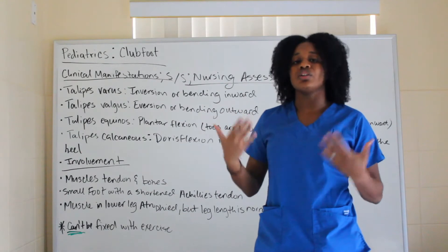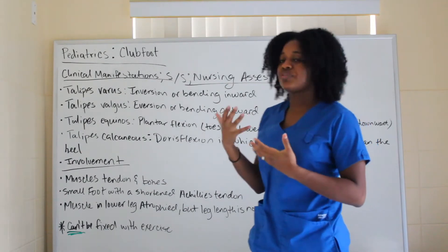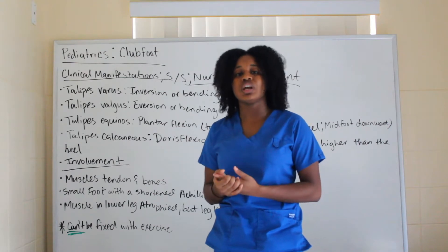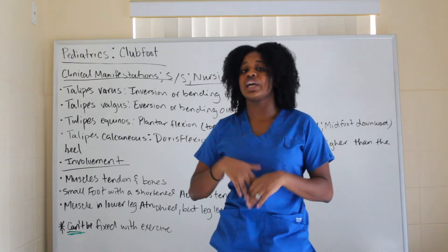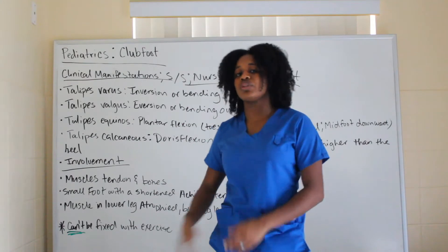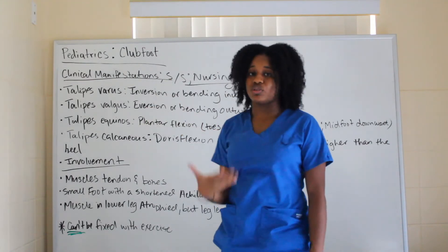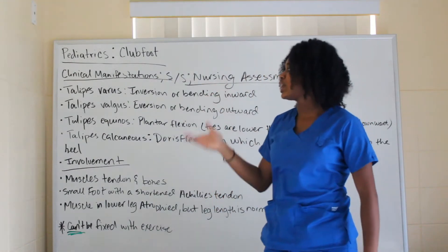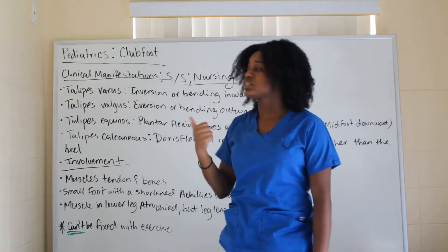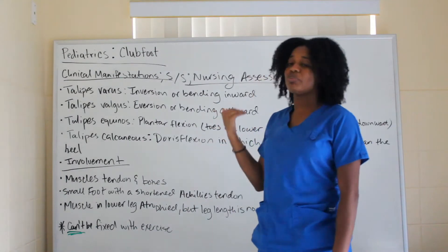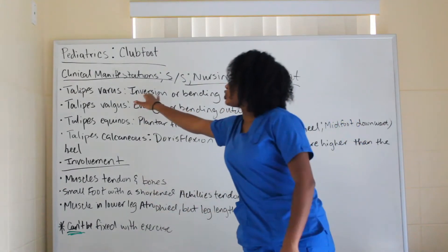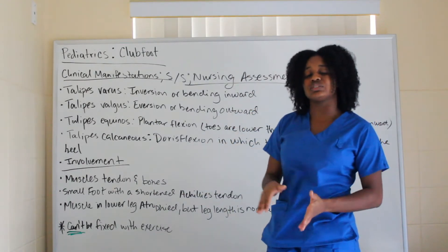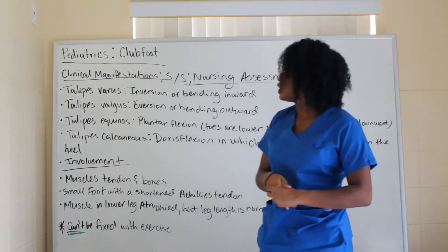Now we have our clinical manifestations, also known as signs and symptoms or nursing assessment. Assessment is primarily observation — you look at the position of the foot, which tells you what's going on and how it can be treated. The first type is talipes varus, which is inversion or bending inward of the foot.